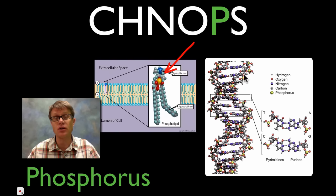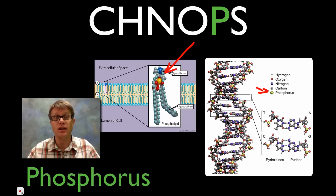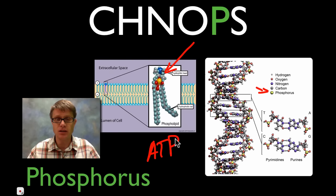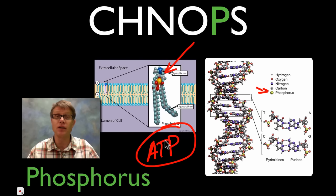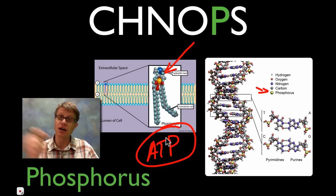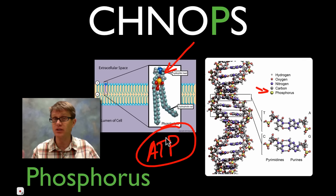...remember — sugar, phosphate, sugar, phosphate, sugar, phosphate backbone. And so phosphorus is important in making our nuclear material. And the one thing that I should have included on here is ATP. Remember ATP is adenosine triphosphate, and as we attach that last phosphate on we're storing energy. Likewise we can release energy as we let it go.